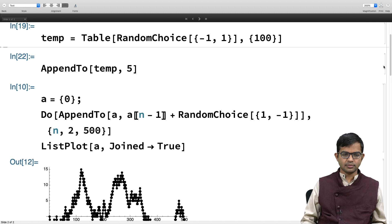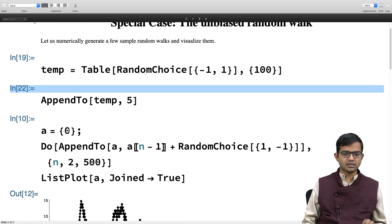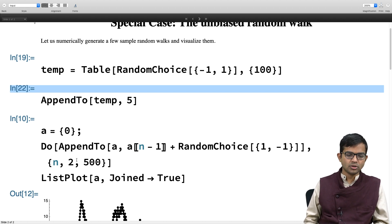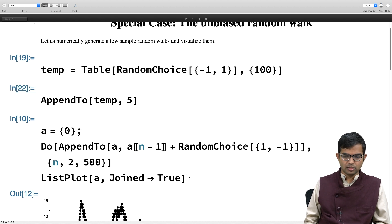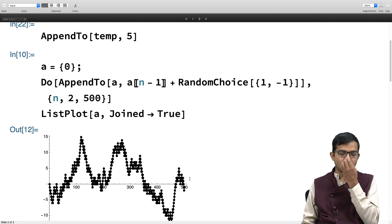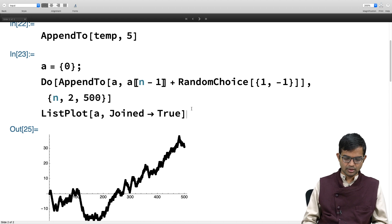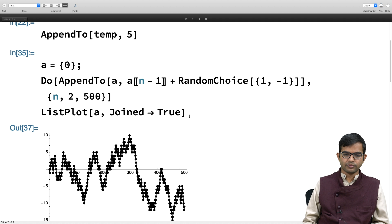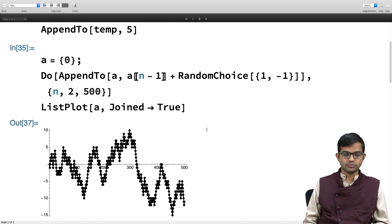Now I'll use AppendTo. It takes an array and includes one more element into it. Having familiarized ourselves with AppendTo, let's look at the logic of this code. Initially I start an array with just 0, then there's a do command where n goes from 2 to 500. It takes the n minus 1th element and adds either plus 1 or minus 1 - that's what a random walk is. Let me generate it again, you get different random walks each time.